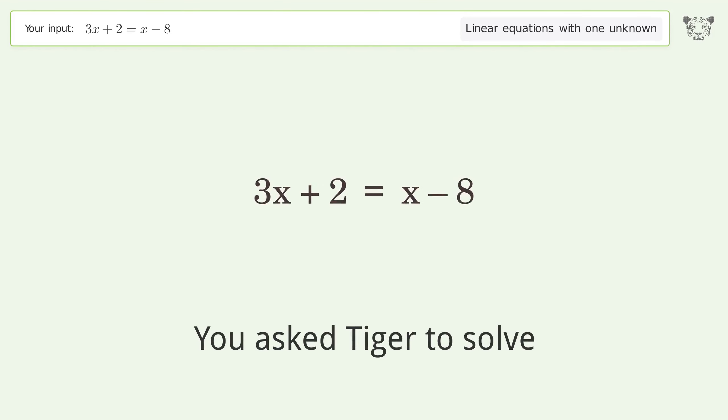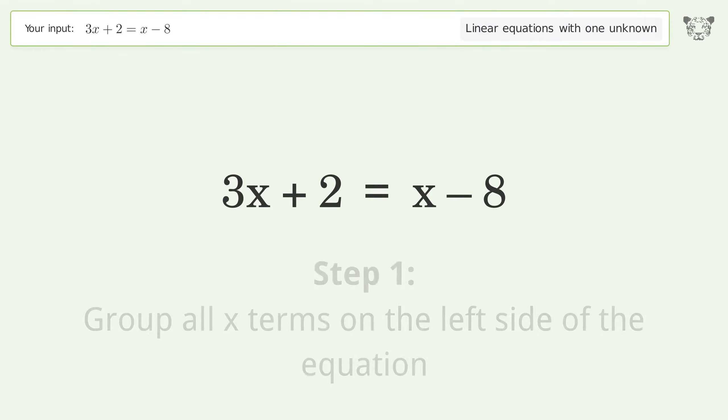You ask Tiger to solve this. This deals with linear equations with one unknown. The final result is x equals negative 5. Let's solve it step by step. Group all x terms on the left side of the equation.